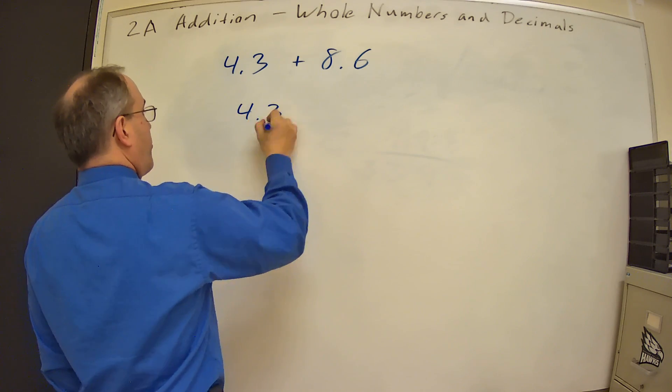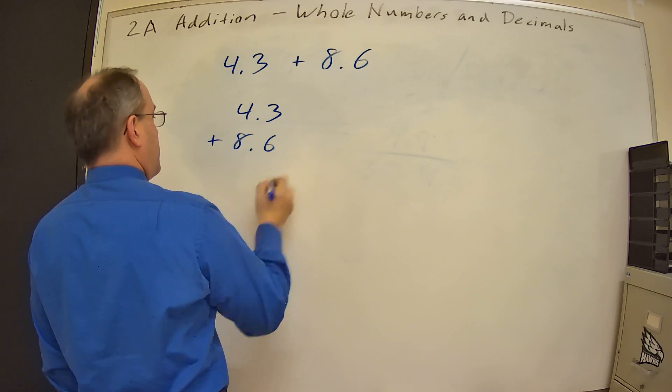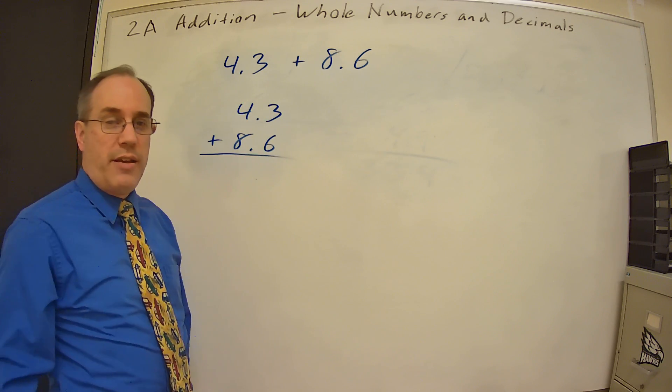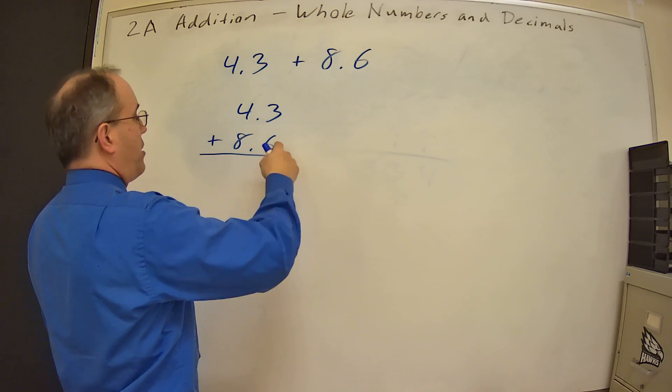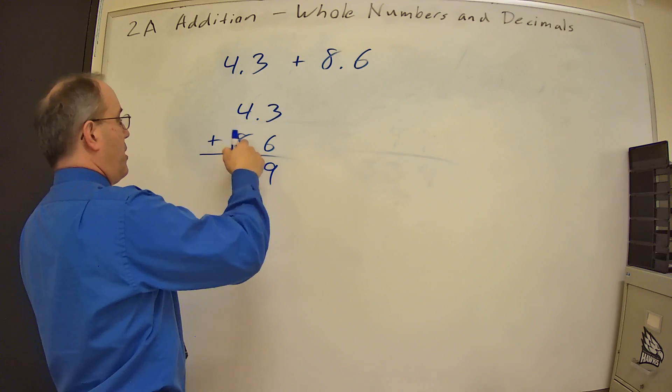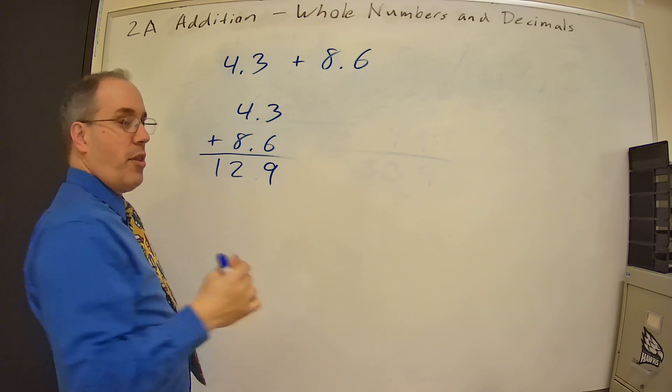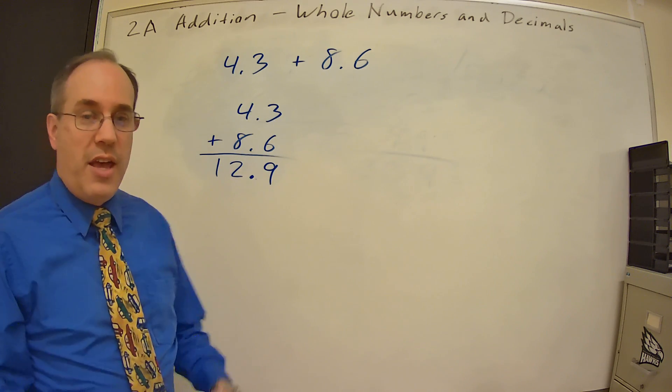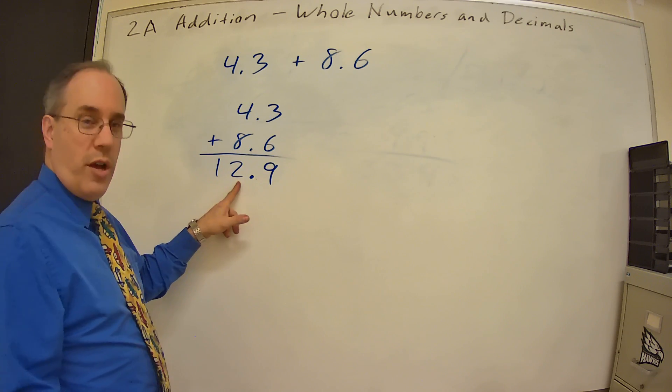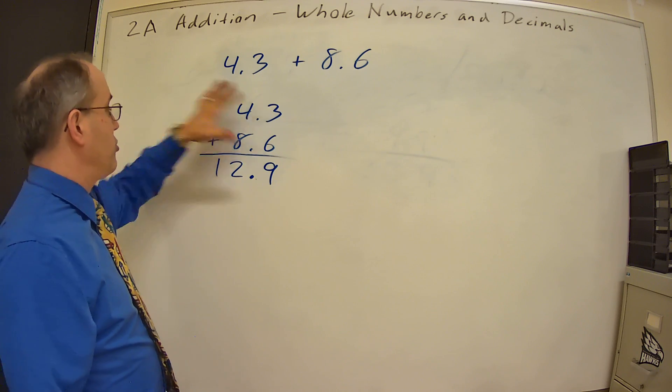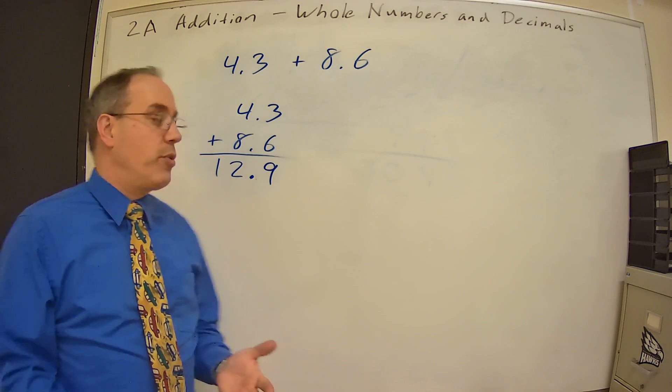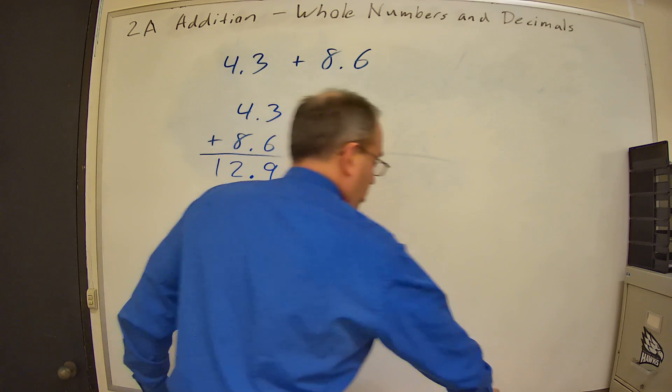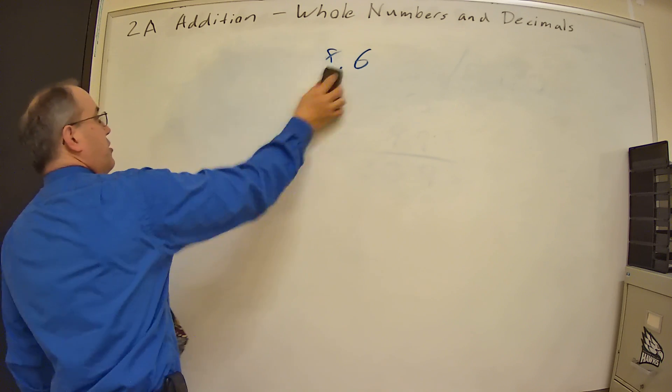So I would have 4.3 plus 8.6. Now that I've got my tenths places lined up, my ones places lined up, I start again. 3 plus 6 is 9. 4 plus 8 is 12. And the one thing we have to be careful of is we just have to remember there's a decimal point, decimal point, we need the decimal point. Okay, these are still the same place values. That's still the tenths, that's still the ones, that's the tens. So we're just going to do the exact same process, we're going to have a decimal point in there. So line up the place values.